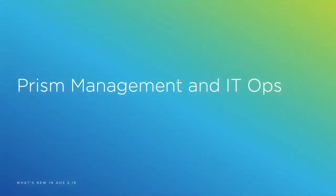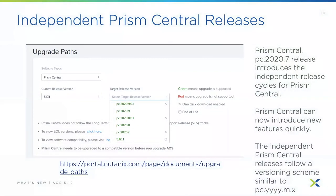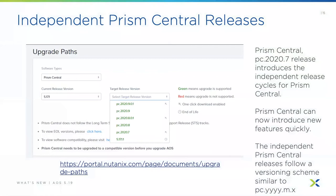Regarding Prism management and operations — we have independent Prism Central releases. In Prism Central release 2020.7, we've moved to an independent release cycle from AOS, allowing Prism Central to introduce new features very quickly. Check out that link to review the upgrade paths.